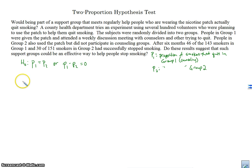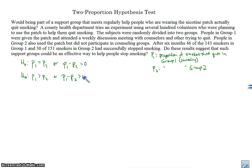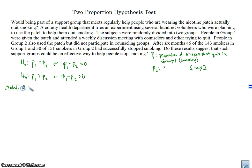The alternative hypothesis is what we're trying to show: that the proportion in group one is greater than the proportion in group two — that more people stopped smoking in group one than in group two. We write that as p1 minus p2 is greater than zero, because if p1 is bigger than p2 then we'll have a positive number greater than zero. Now the next thing we need to do is our assumptions and conditions.